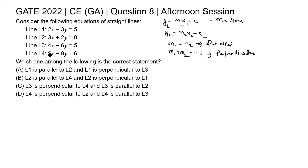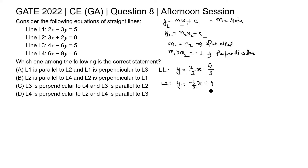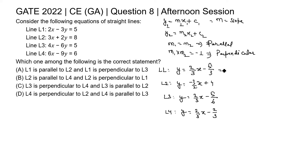Now, let's check the slope of each line by rewriting each equation in the form y = mx + c. For line L1: y = (2/3)x − 5/3. For line L2: y = −(3/2)x + 4. For line L3: y = (2/3)x − 5/6. For line L4: y = (2/3)x − 2/3.